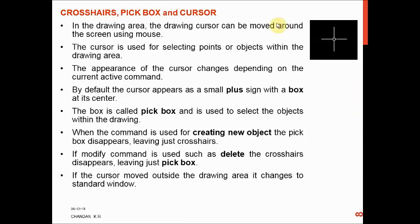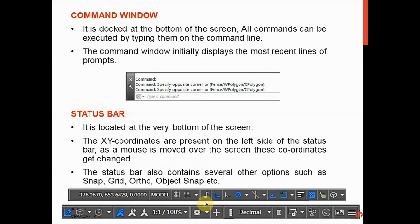If you move the cursor outside the drawing area, it appears as a standard Windows arrow cursor. The command window is docked at the bottom of the screen, and all commands can be executed by typing them on the command line. For example, type 'LINE' to draw a line, or 'CIRCLE' to draw a circle. The command window initially displays the most recent commands used.